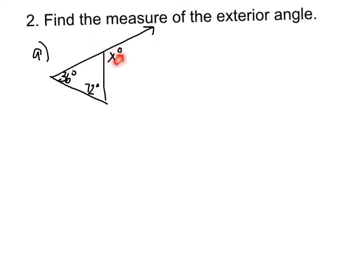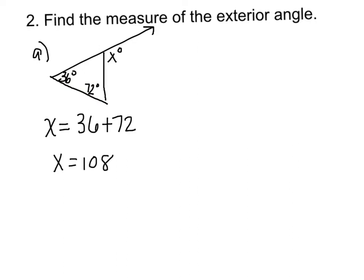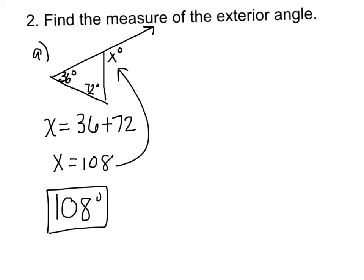Example number two: x equals 36 plus 72, because the exterior angle, which is x, is equal to the sum of the two inside angles that are non-adjacent. So x equals 108. That is the value of x. The missing angle measure is 108 degrees.